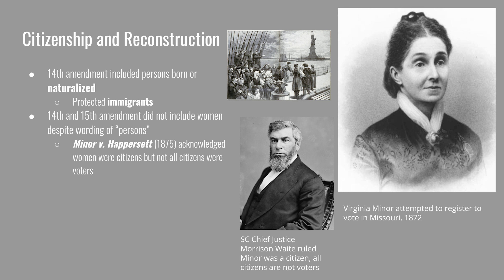Women's suffrage activists knew the omission was a problem and heavily campaigned for explicit inclusion. After the amendments were ratified, women tried to gain inclusion through action. Virginia Minor was a women's suffrage activist who in 1872 attempted to register to vote in Missouri. She was arrested, appealed her conviction all the way to the Supreme Court, and Chief Justice Morrison Waite ruled against her, stating that although women were citizens, not all citizens are voters. This kept women from voting for another 48 years.